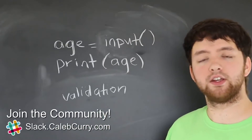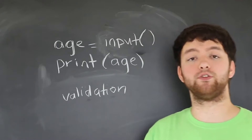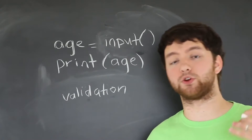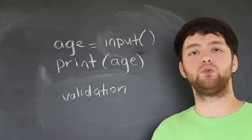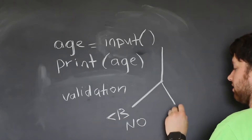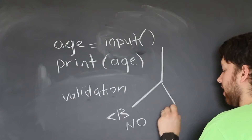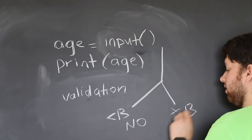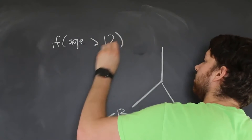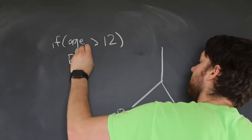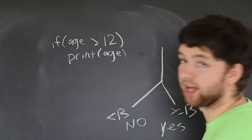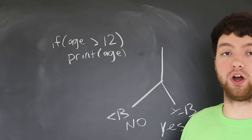Once we have this basis, we want our application to do different things depending on the input. For example, if we made a game that you had to be 13 years old to play, we might have something like this. Less than 13? You don't get access. If you're greater than or equal to 13, then yes, you get access. If age is greater than 12, we can do something such as print age. That is only going to print if age is greater than 12.